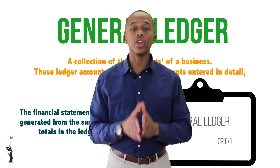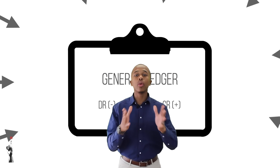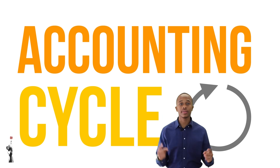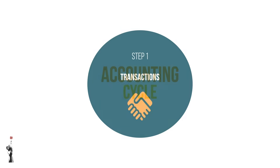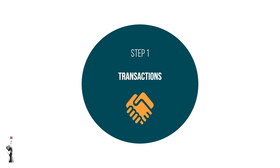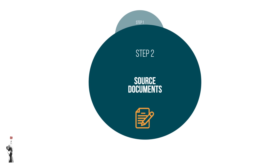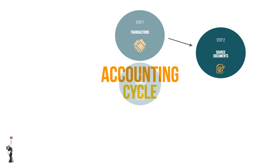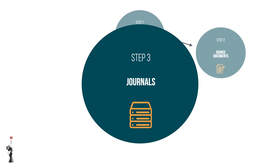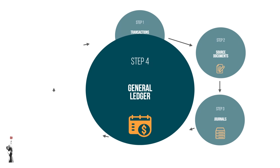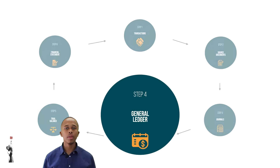The general ledger is the summary of all the accounts put in one document called the general ledger. In the accounting cycle, the first step is transactions, the second step is recording on a source document, the third step is recording source documents on subsidiary journals, and then step four is when all the journals are posted on the general ledger — and this is what this lesson is about.